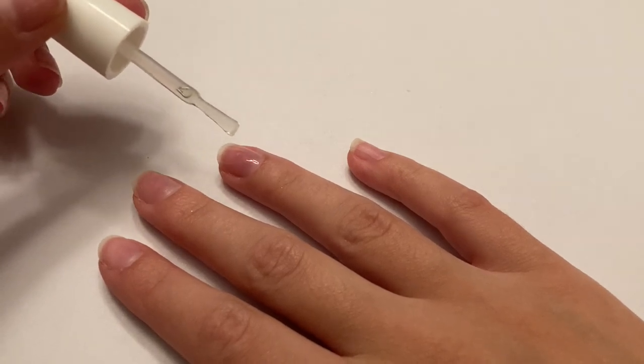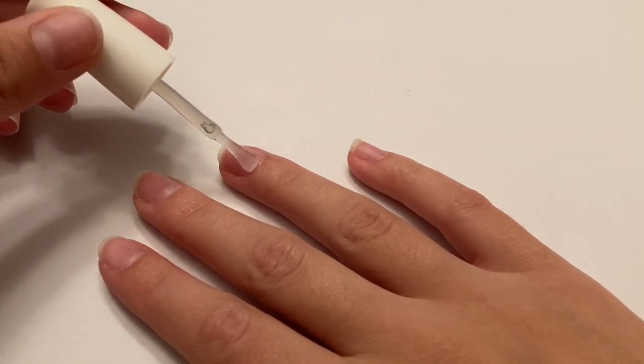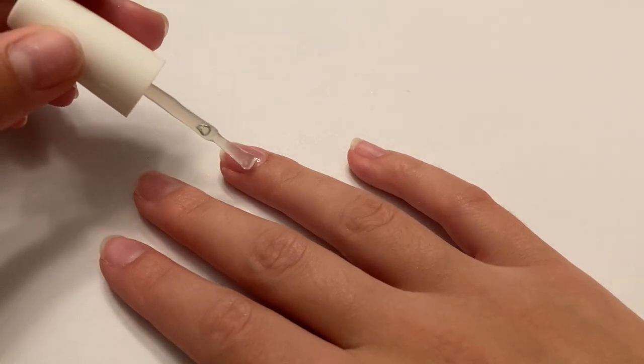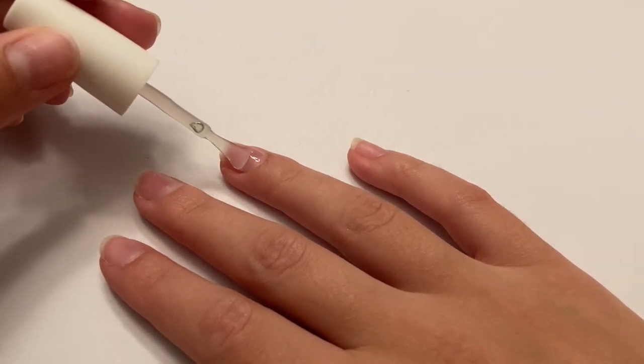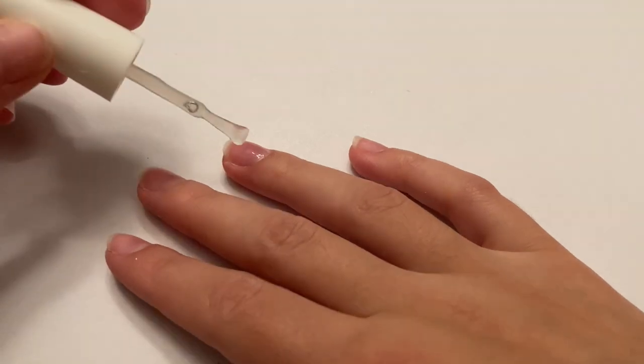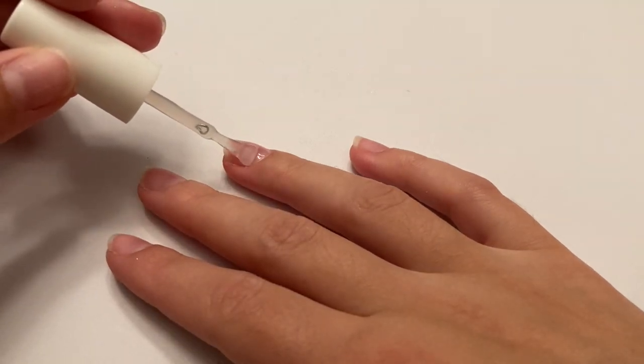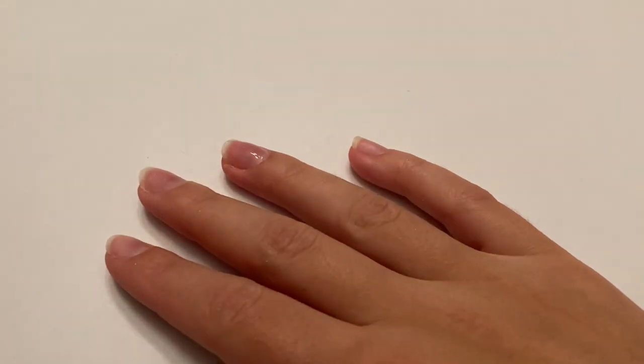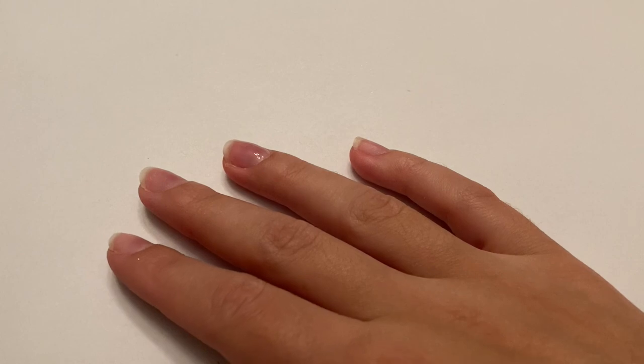So the first thing I am going to be trying out with this peel-off base coat is just applying the peel-off base coat without prepping my nails, no buffing, no pushing back my cuticles, no dehydrator, or anything like that. Just putting it right onto my natural nails.